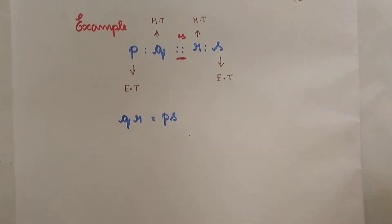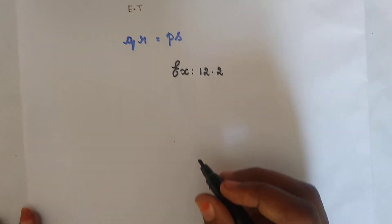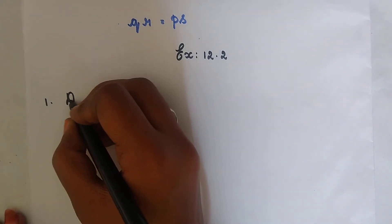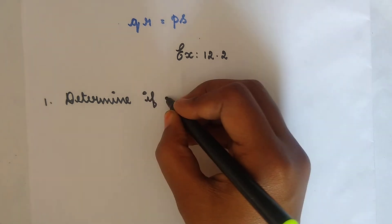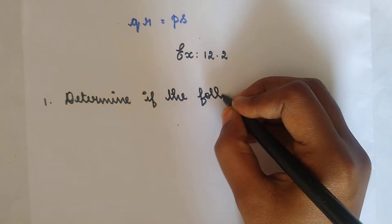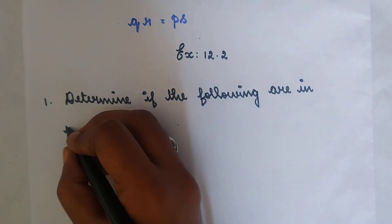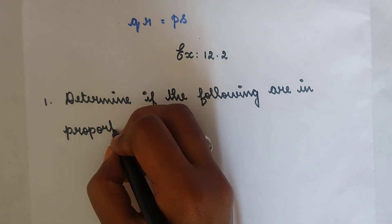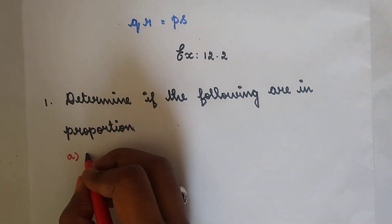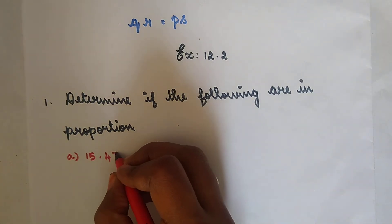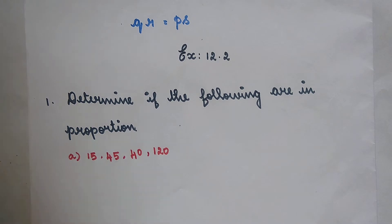Now let's move to Exercise 12.2. The first question asks us to determine if the following are in proportion. Let me take subdivision A: the numbers are 15, 45, 40, and 120. We have to find whether these four numbers are in proportion.